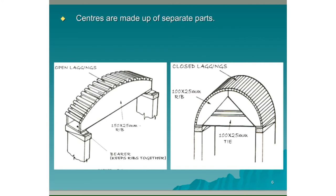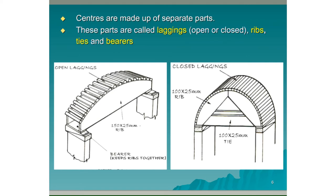Centres are made up of separate parts. These parts are called laggings, and they can be open or closed. The other parts are ribs, ties, and bearers.